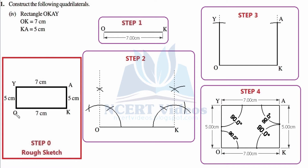We know it is OK as our base with vertices O and K. If we write OK in this manner then A should be here and Y should be here, meaning we are going to construct our rectangle in anti-clockwise manner. Also, if OK is 7 centimeters, the opposite side YA must also equal 7 centimeters, using the property that opposite sides of a rectangle are equal. KA is 5 centimeters, so YO should also equal 5 centimeters.